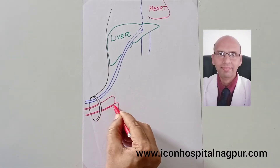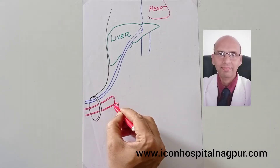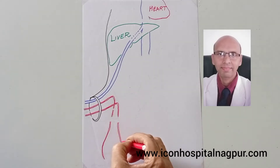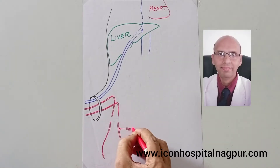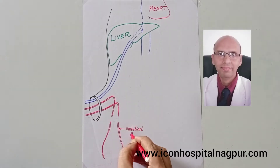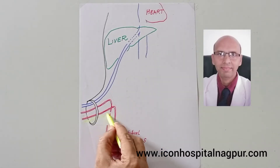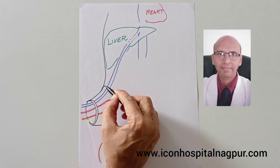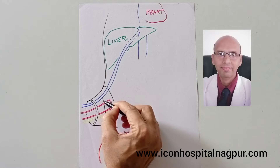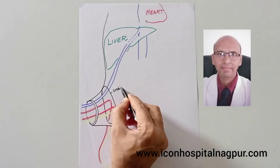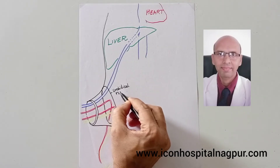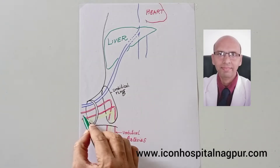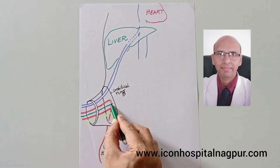The next important structures are the two umbilical arteries, and they are connecting to the iliac vessels. The next important structure is the urachus, which connects with the urinary bladder. This is the umbilical ring, and this is the urinary bladder here.